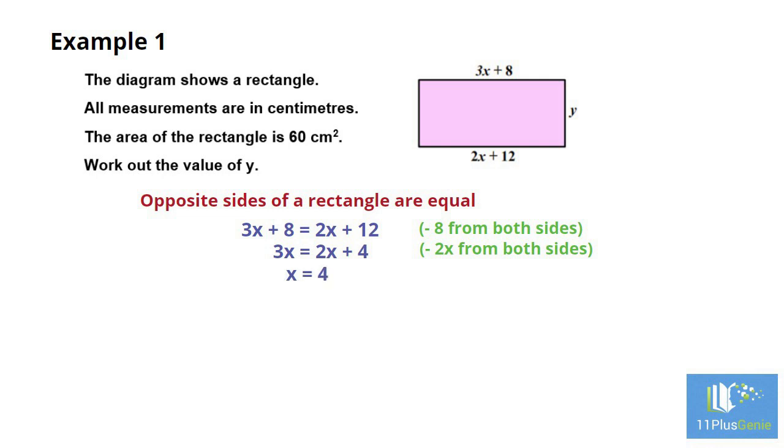We can now work out the length of one side of the rectangle by using x equals 4 and the expression 2x plus 12. We have 2 times 4 plus 12 which equals 20. The area of the rectangle is 60 square centimeters. We now have that 60 equals 20 times y. Y must equal 3 centimeters.